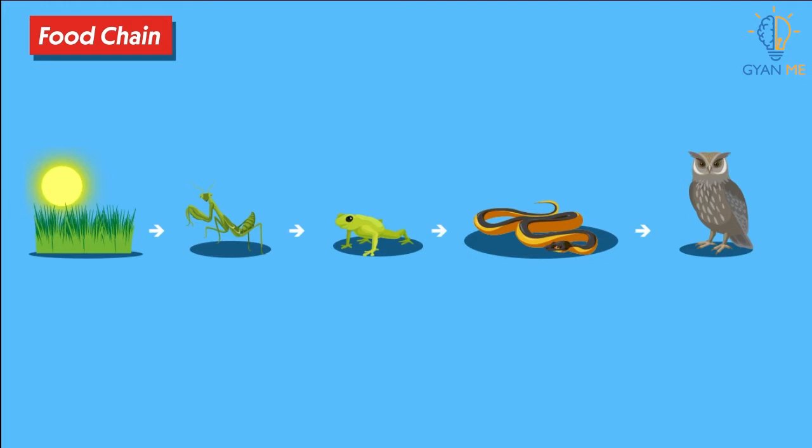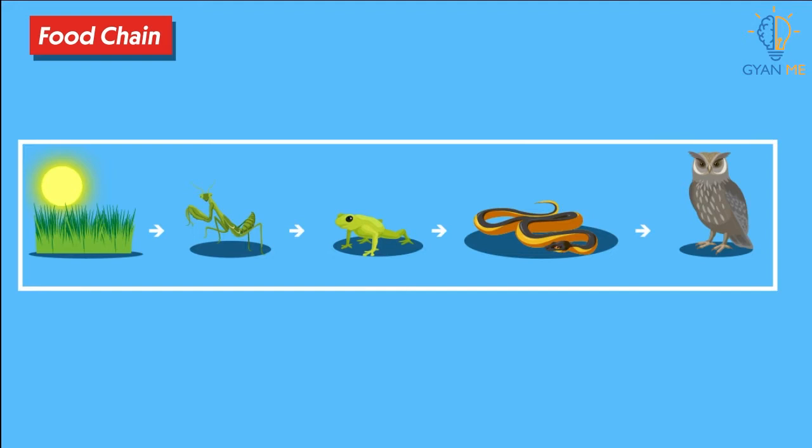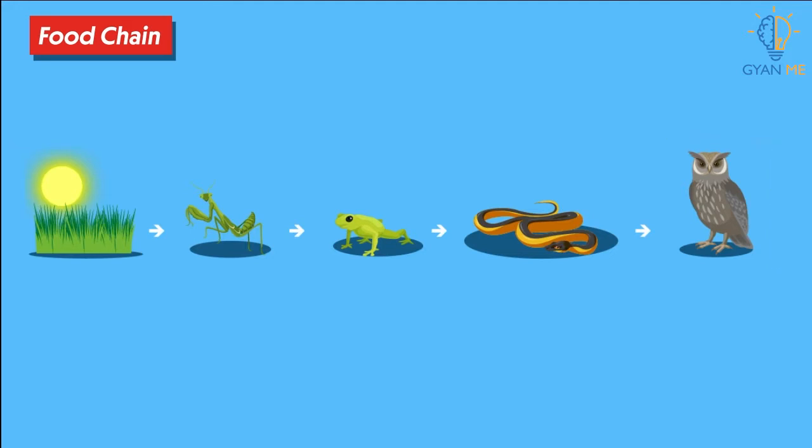We can make out from this figure that organisms form a chain of eating and being eaten. We can also observe that plants use sunlight to produce food of their own. We already know this and hence they are called producers or autotrophs. Plants are eaten up by animals like grasshopper which is in turn eaten up by frog. Frog is eaten up by snake and snakes are eaten up by owls or vultures.